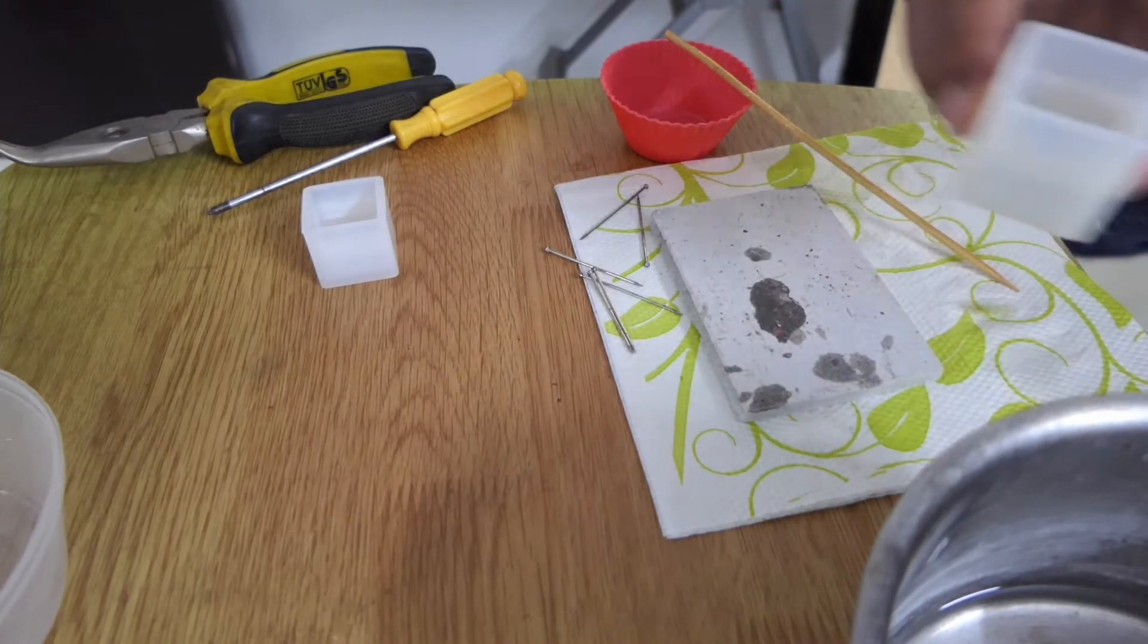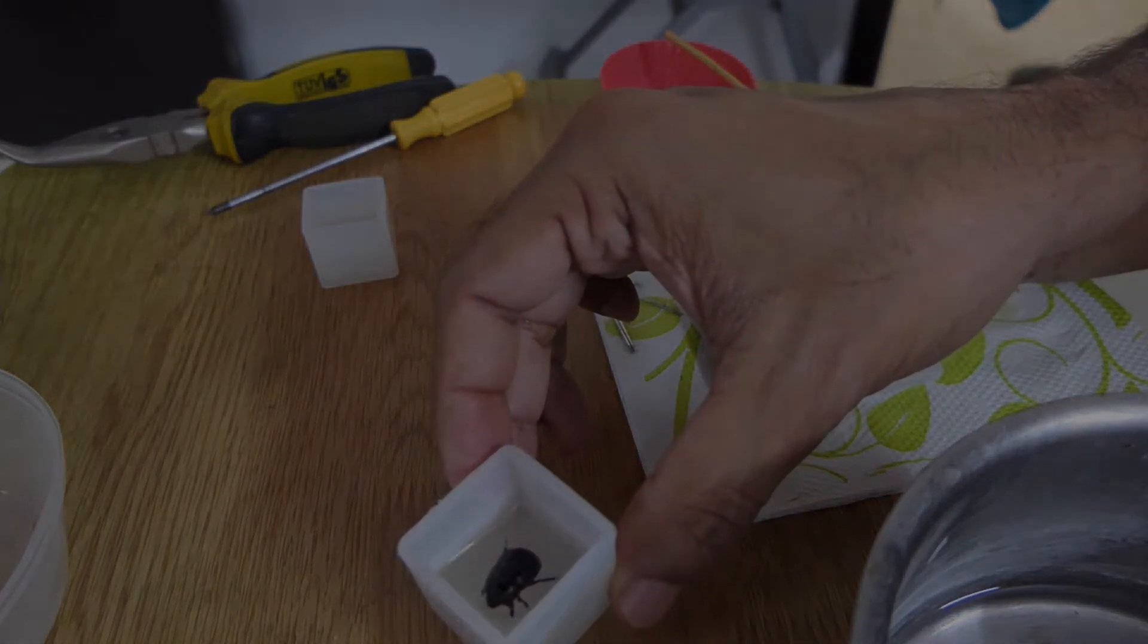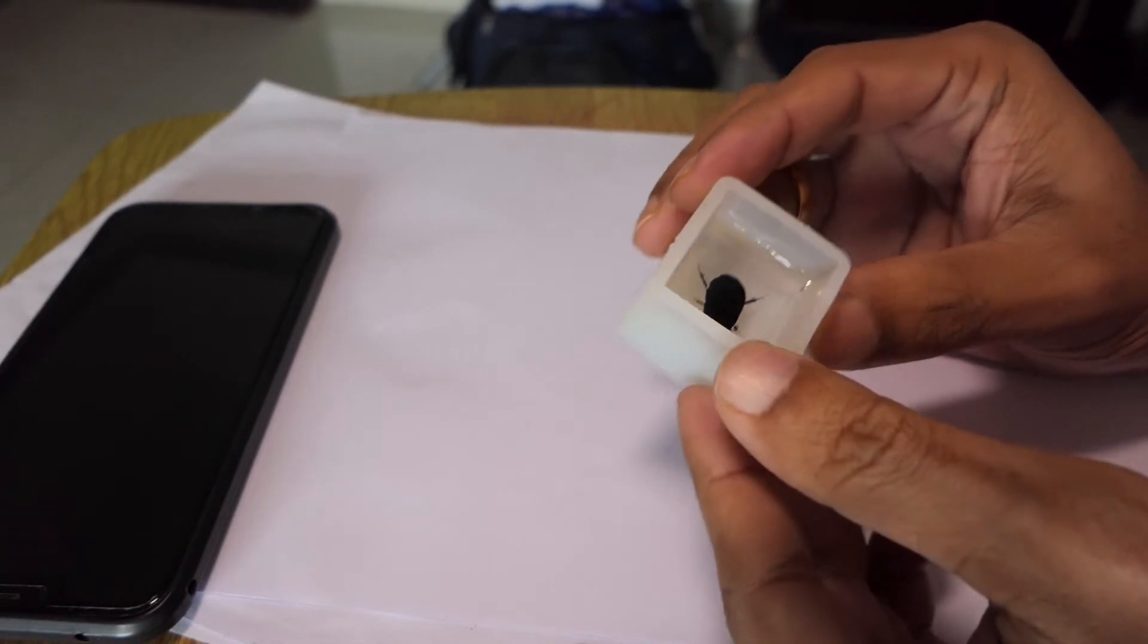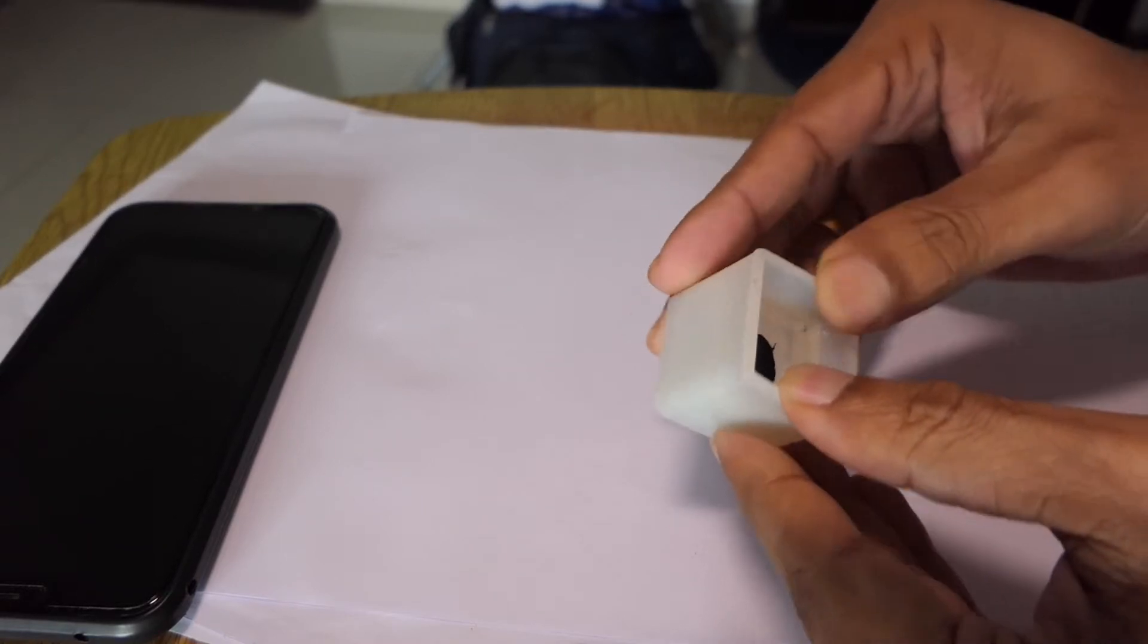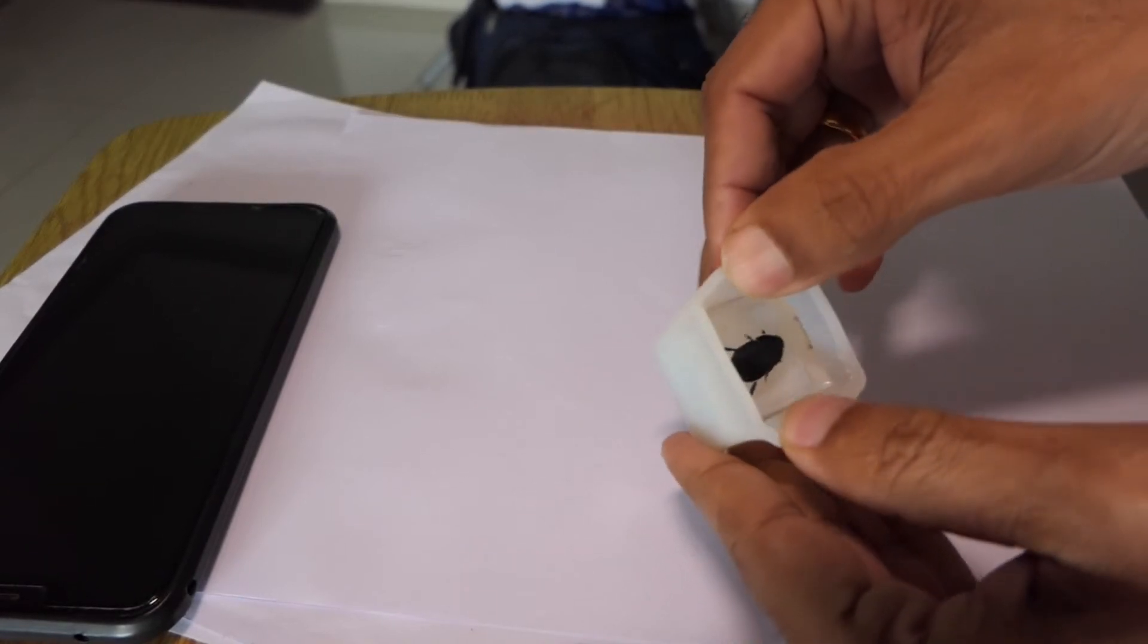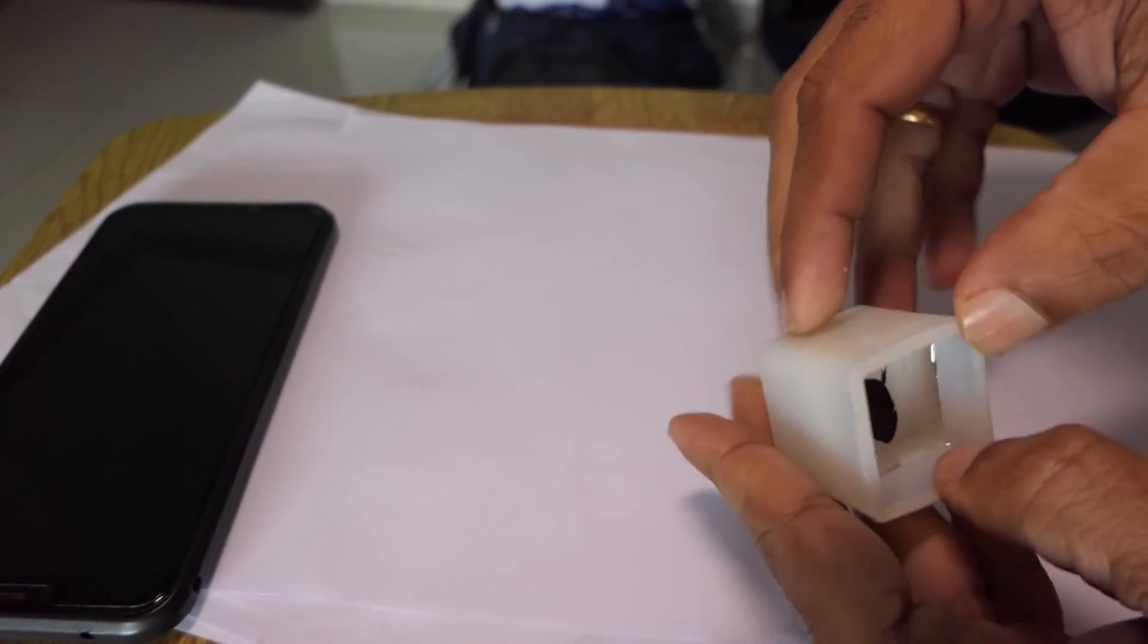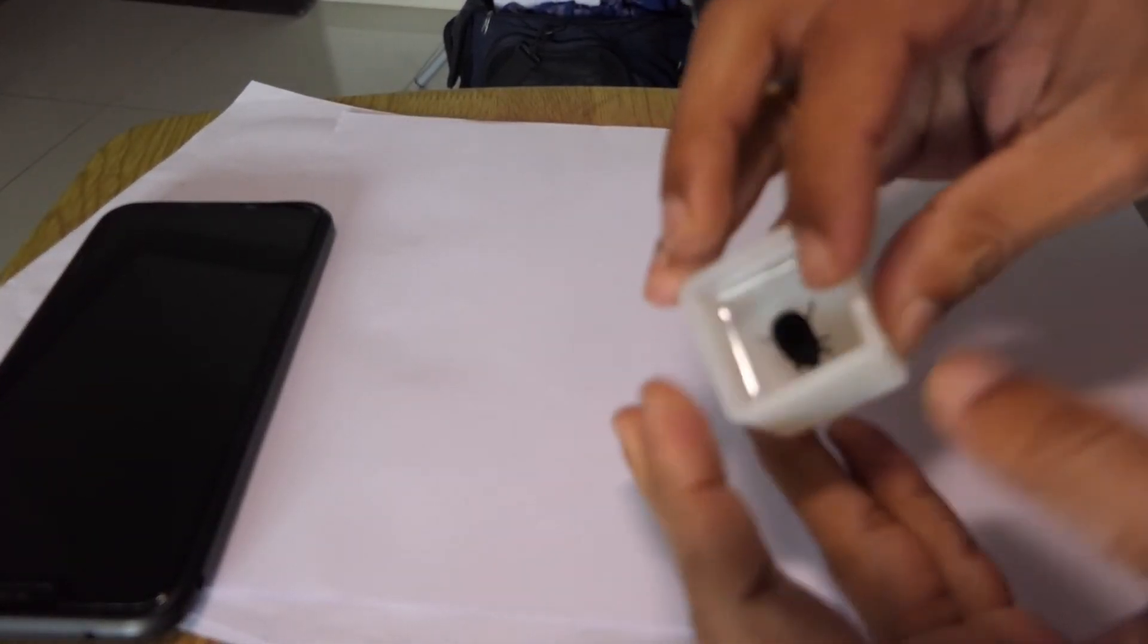But here I completely covered the beetle. When I came back after around 12 hours the next morning, you can see that it's worked—the beetle has set within. Here I'm trying to remove the resin from the silicone mold, and you can see that I'm encountering a bit of difficulty taking it out.